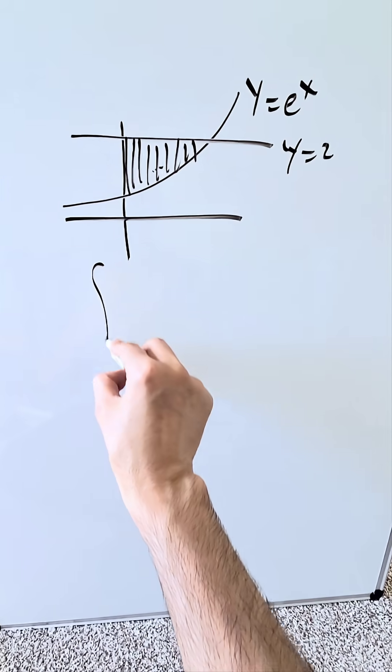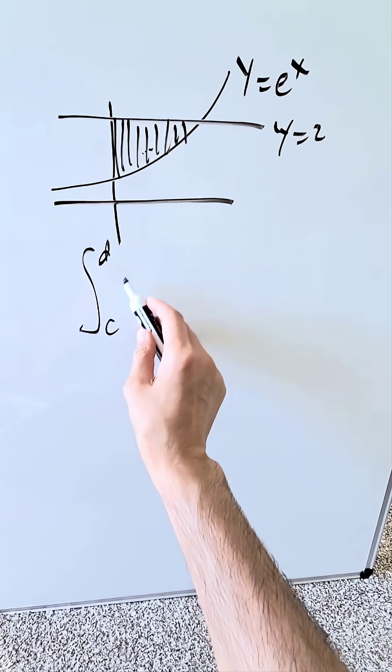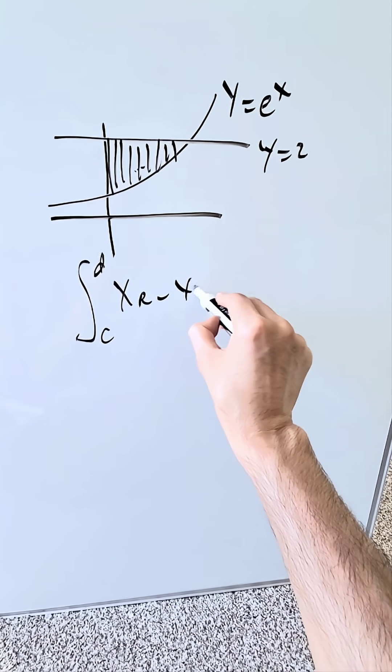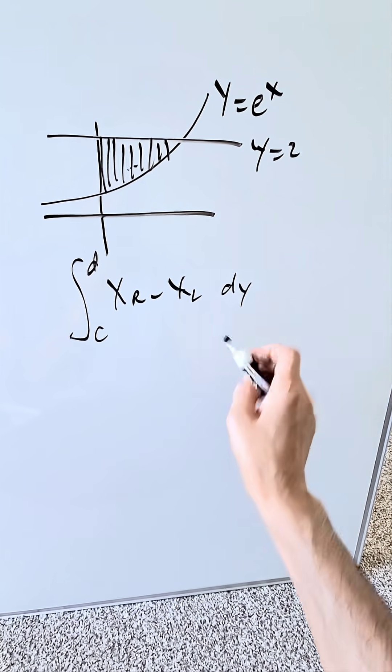When you're doing an integral with respect to dy, limits upper and lower along the y-axis, right boundary curve minus left boundary curve with respect to dy.